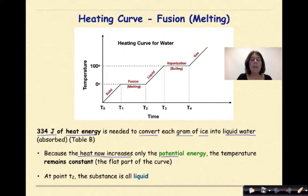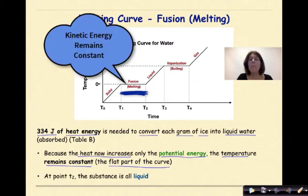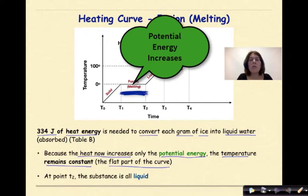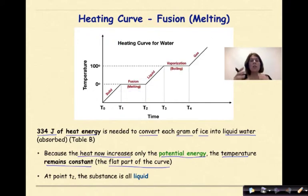334 joules of heat energy is needed to convert each gram of ice into liquid water. In other words, it's being absorbed because this is an endothermic process. Because the heat now increases only the potential energy, the temperature remains constant, which is really important to notice. From T1 to T2, we'll see that flat part of the curve. That flat part of the curve means that your kinetic energy, your temperature is staying constant, but your potential energy is increasing because all that energy is going into breaking apart those water molecules, breaking apart those intermolecular forces.